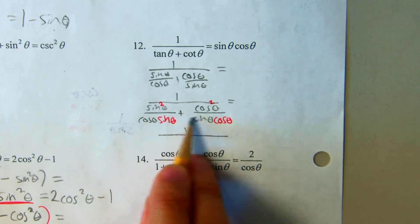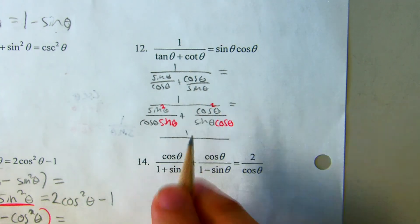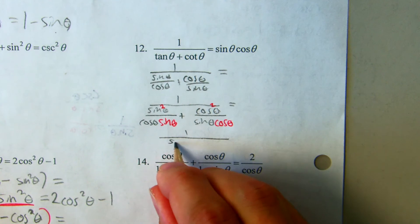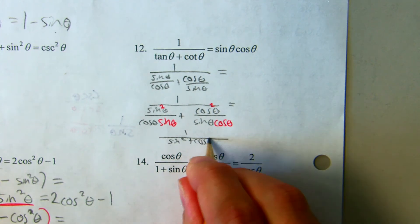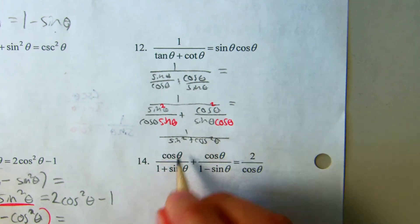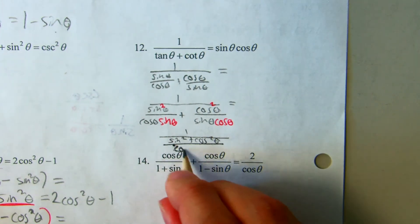Now I can push all of this together, and I can say this would be sine squared plus cosine squared over that common denominator.